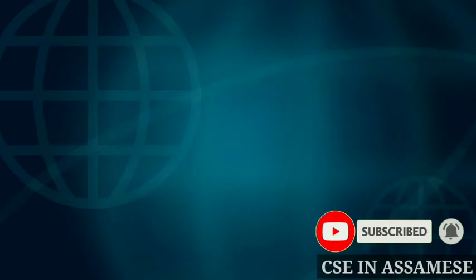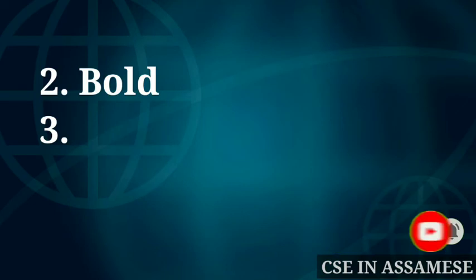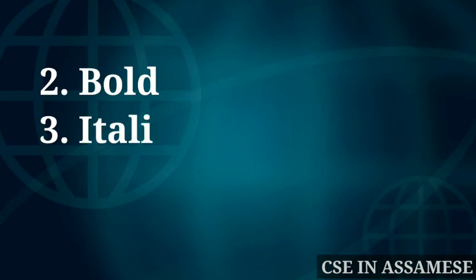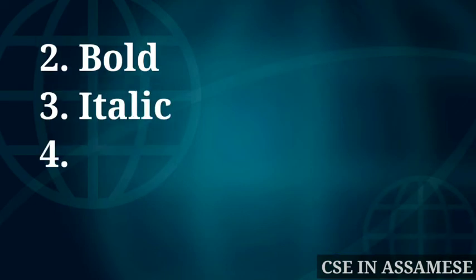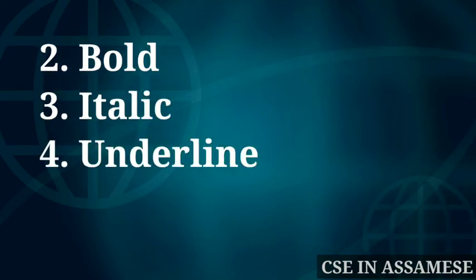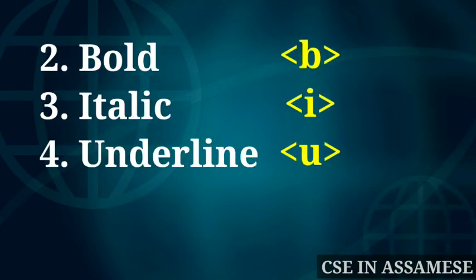Next, I will cover three more tags: Bold, Italic, and Underline. For Bold, we use the B tag. For Italic, we use the I tag. And for Underline, we use the U tag.